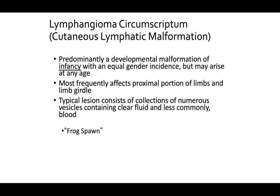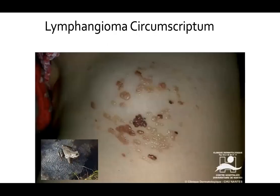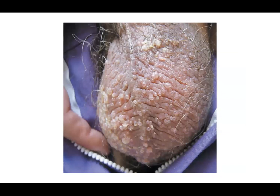Lymphangioma circumscriptum, also known as cutaneous lymphatic malformation, is predominantly a developmental malformation of infancy with equal gender incidence, though it may arise at any age. It most frequently affects proximal portions of the limbs and limb girdle. Typical lesions consist of numerous vesicles containing clear fluid and, less commonly, blood — many people liken this to frog spawn. You see that well-demarcated, clear to yellowish appearance. These are not true vesicles but dilated endothelial cells giving the appearance of vesicles.